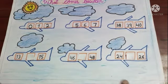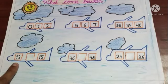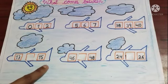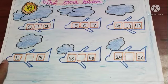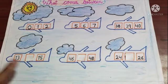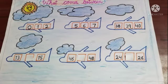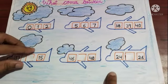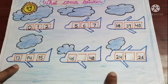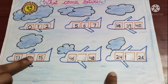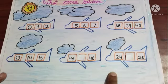And the next number is thirteen and fifteen. Please tell me which number comes between thirteen and fifteen? Yes kids, fourteen. Thirteen, fourteen, fifteen.